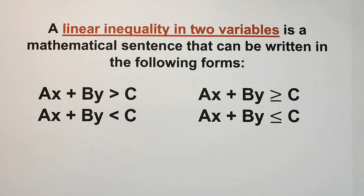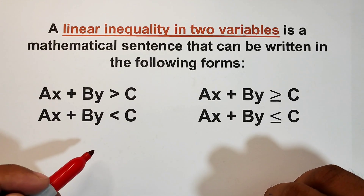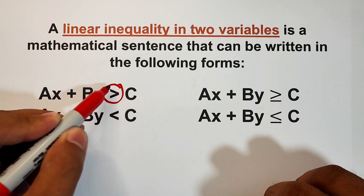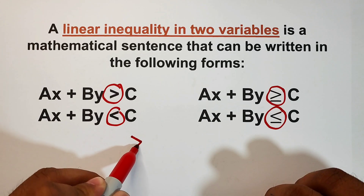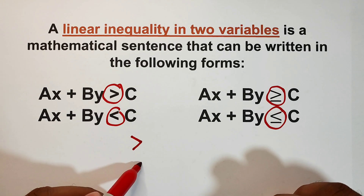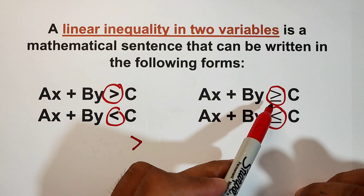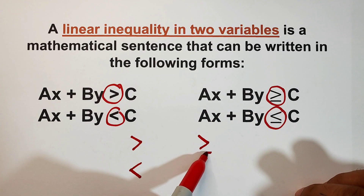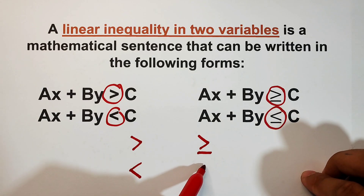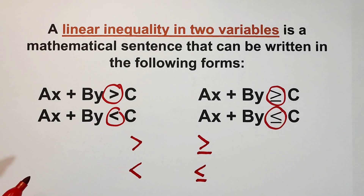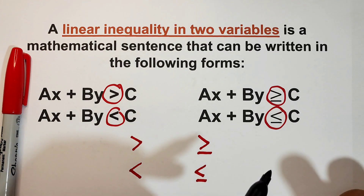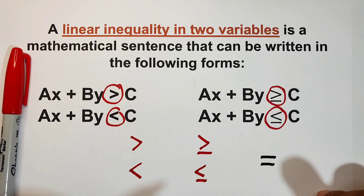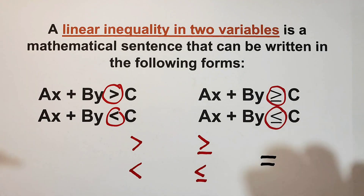The reason this is called an inequality is because it uses these symbols: greater than, less than, greater than or equal to, and less than or equal to. Compared to a linear equation, we can easily determine whether a mathematical sentence is a linear equation if it uses the equal sign. So we have four different symbols for inequalities.